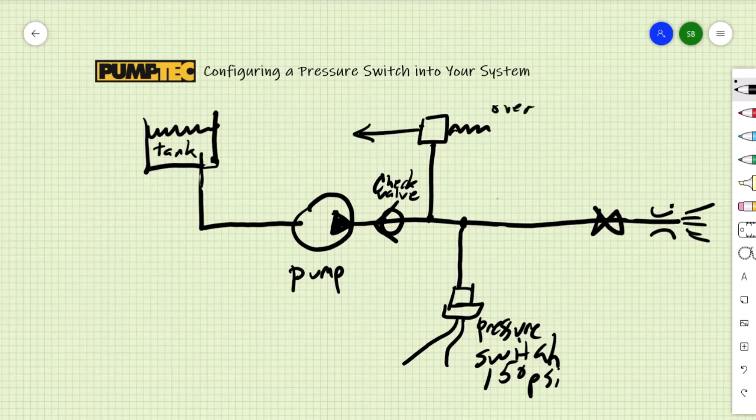I would recommend the overpressure device be set higher than the pressure switch, which in this case may be 170 psi.